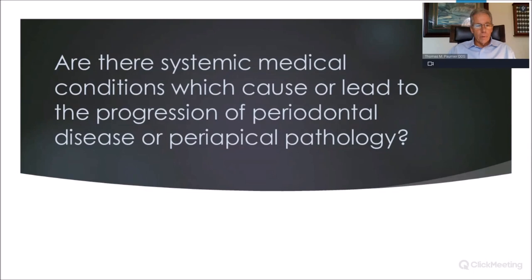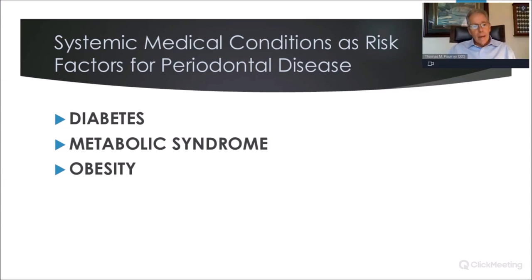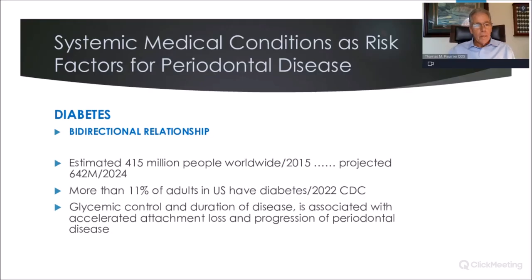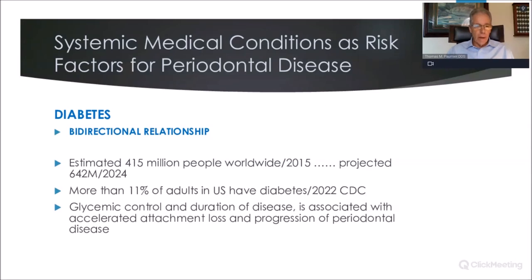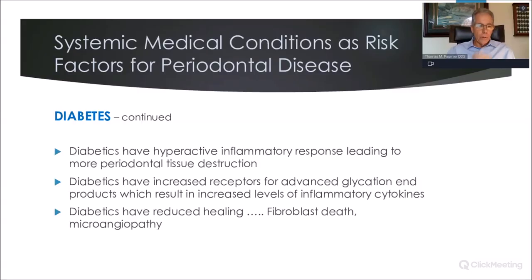The question: are there systemic medical conditions which cause or lead to the progression of periodontal disease? There are three key areas: diabetes, metabolic syndrome, and obesity. Probably the best-studied is diabetes, and we know there really is a bi-directional relationship. It's estimated that by next year, 640-plus million people worldwide will be diabetic — more than 11 percent of adults in the United States. How well patients control their diabetes and how long they've been diabetic is associated with accelerated attachment loss and progression of periodontal disease.